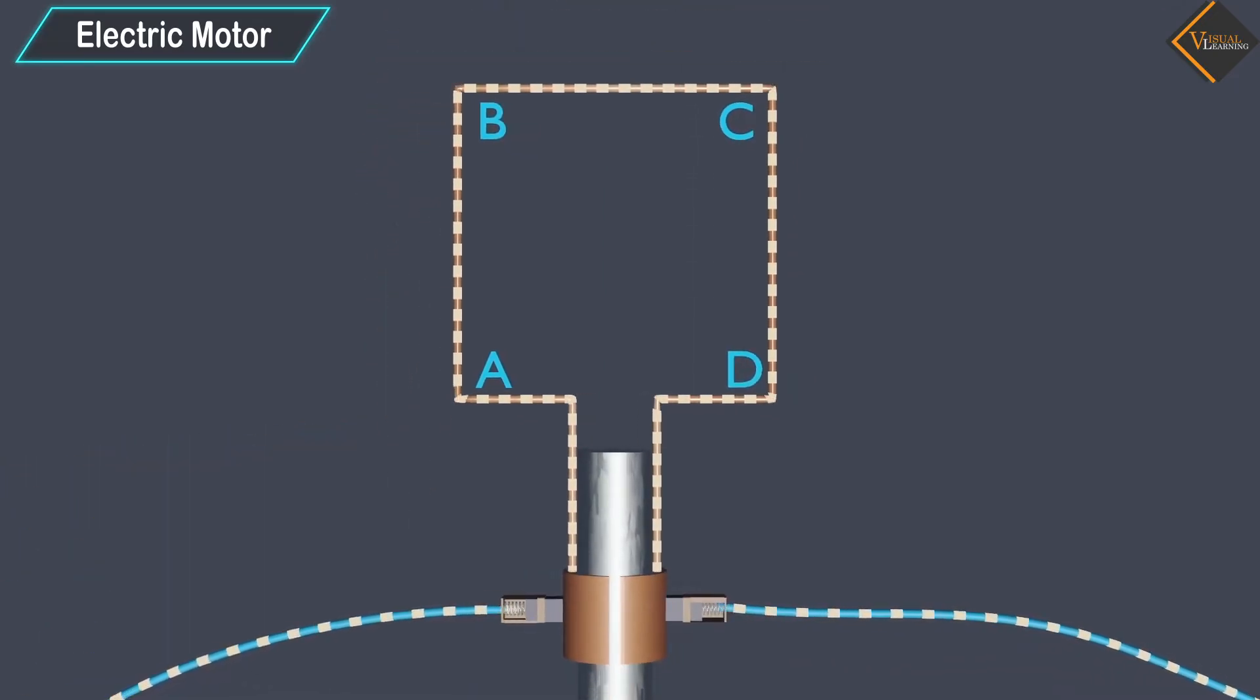Notice that the current in arm A, B of the coil flows from A to B. In arm C, D, it flows from C to D, that is, opposite to the direction of current through arm A, B.